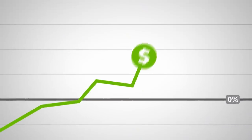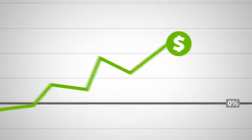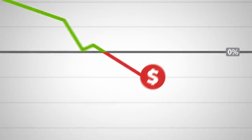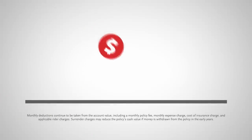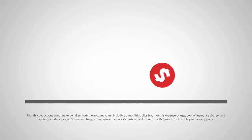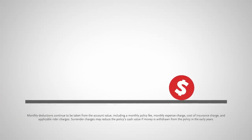Two words: potential and protection. Indexed universal life insurance offers protection from index declines with a feature called the floor. The floor allows zero to be your hero.